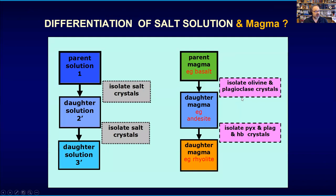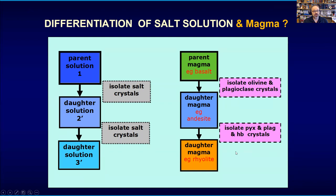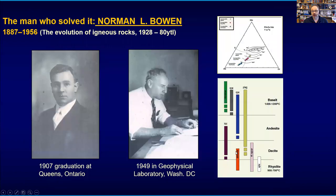Going back to my undergrad supervisor Colin Donaldson — we have a parent solution or parent magma. We isolate crystals, then we get a daughter solution. We can isolate yet more crystals and we get another daughter solution. Magmas are more complex — they are multi-component systems with more crystal types on the go. So if we have a parental basalt magma, we will isolate olivine and plagioclase crystals to start with, making a daughter andesite liquid. Then we might isolate pyroxene, plagioclase, potentially hornblende, and the daughter magma might ultimately be a rhyolite. In reality this is not done in discrete steps — it's a more gradual process, or you could separate it in many, many millions of small steps, as Mr. Bowen realized. This was back in the 1920s already — Bowen was a pioneer here.